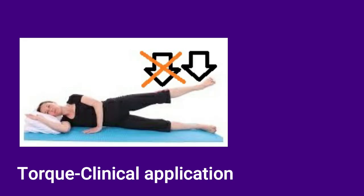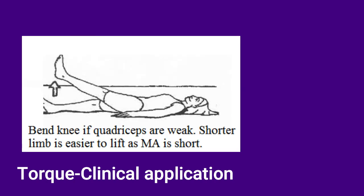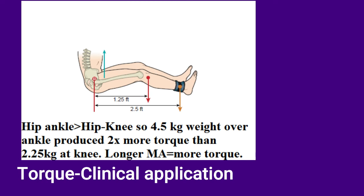If you are working on strengthening hip abductors of your patient, keep your resistive hand at the ankle rather than at the patient's knee. This will require your patient to produce more effort to abduct the hip, and you'd have to give less force as resistance. On the other side, if your patient has weak quadriceps, ask them to bend the knee while doing exercises like SLR. As the resistance arm shortens, their weak quadriceps will easily carry the limb through the leg raise exercise without needing the therapist's assistance. Another way to use torque in your clinic is to change torque by changing force. For example, if you're trying to strengthen quadriceps, place the weight at the ankle rather than the knee. Research has shown that a 4.5 kg weight at the ankle produces twice as much torque as a 2 kg weight at the knee.